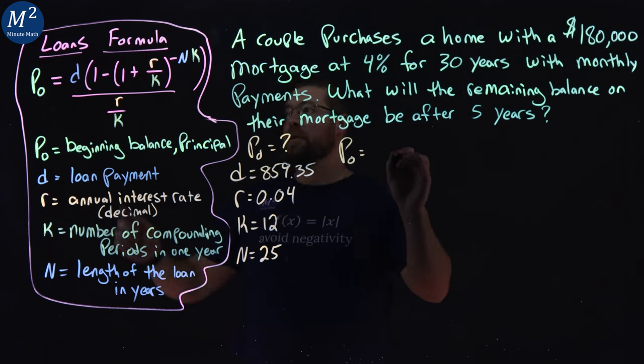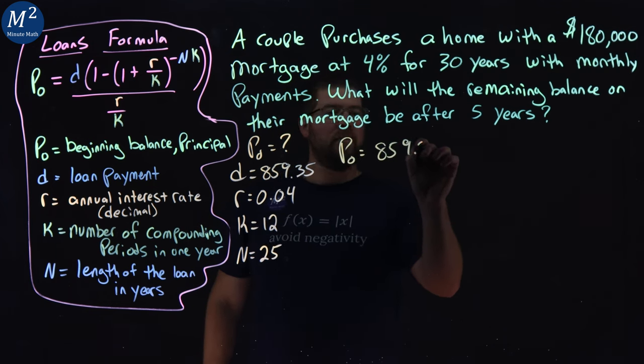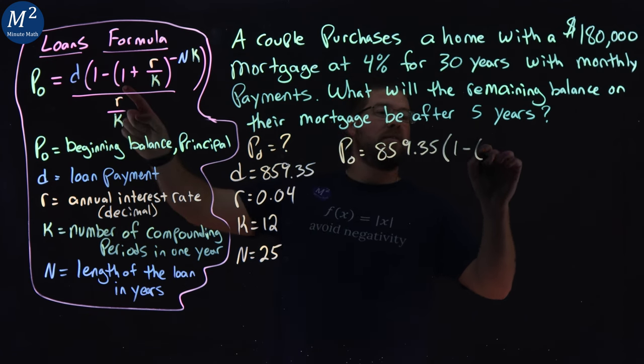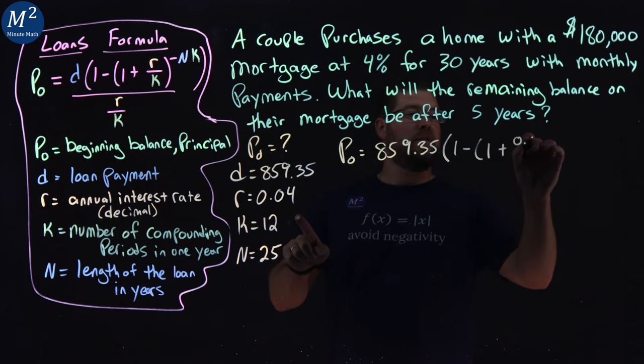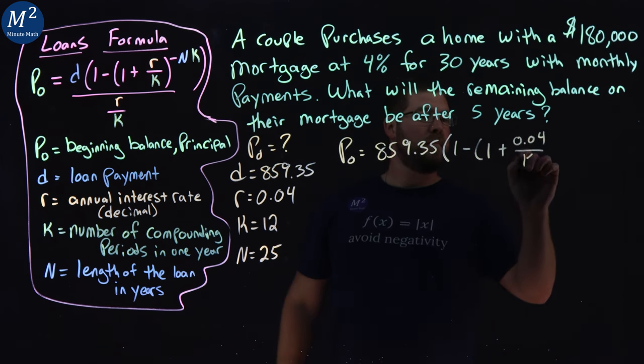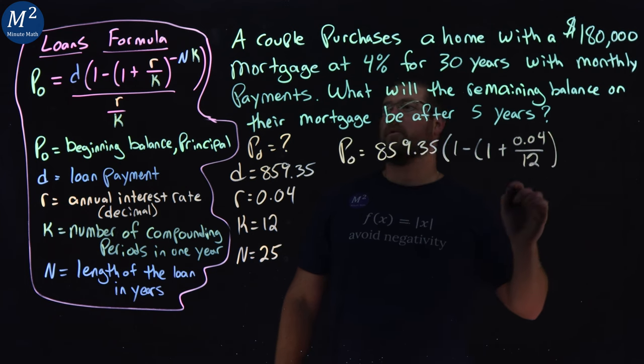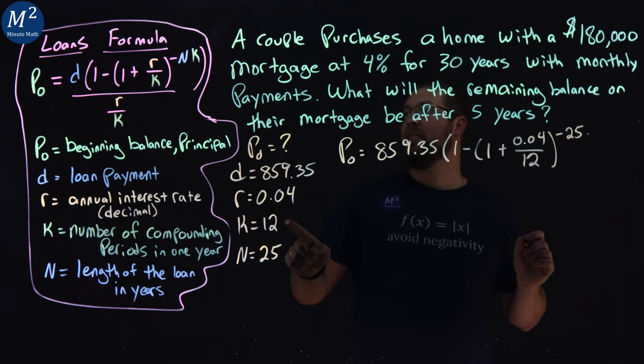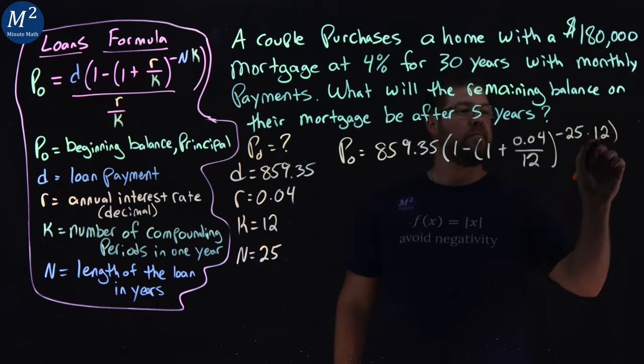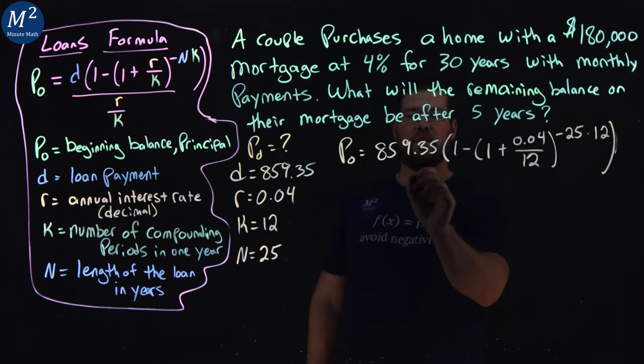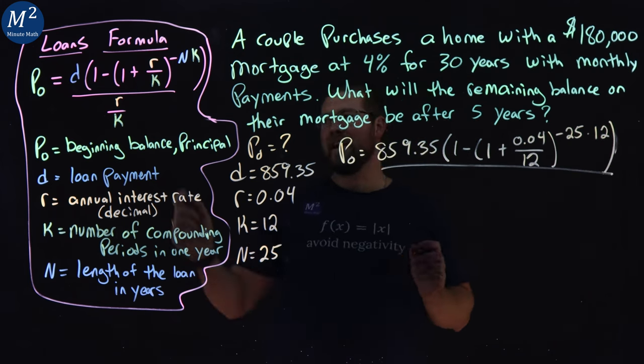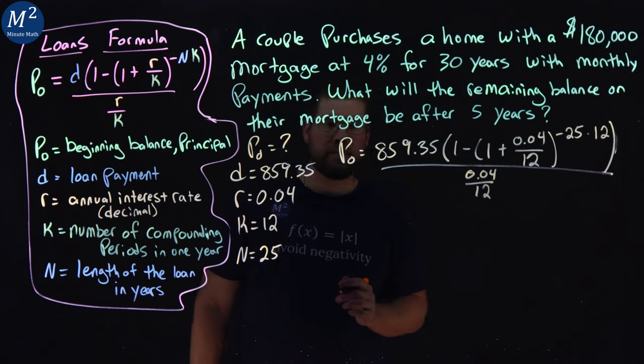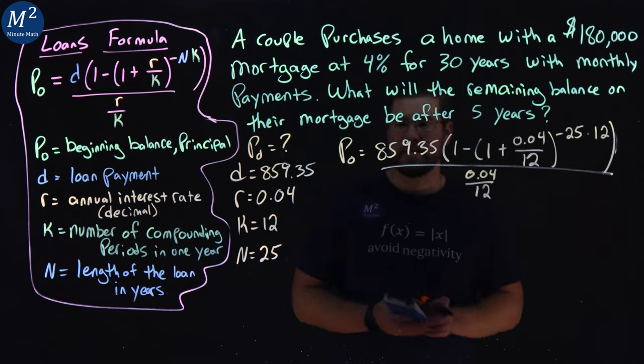So P sub 0 is equal to a D value 859.35 times 1 minus parentheses of 1 plus R, 0.04 over K, which is 12, to the negative N, which is 25 now, times a K value, which is 12. Make sure all that's in parentheses. All over R over K, which is 0.04 over 12. And now I'm going to use my calculator to help me simplify this.